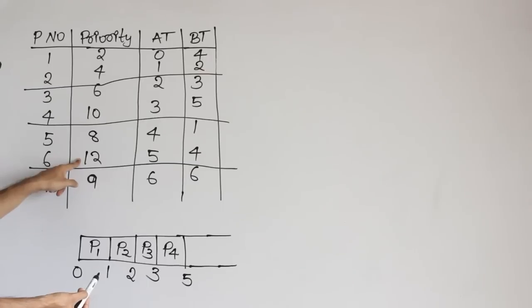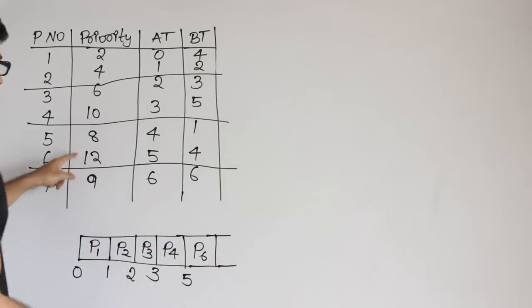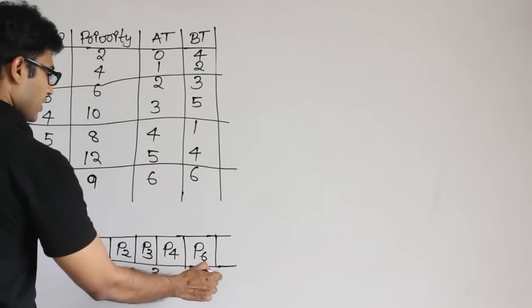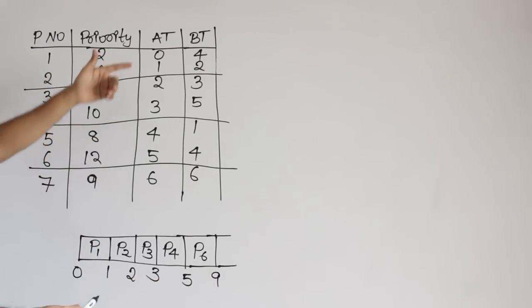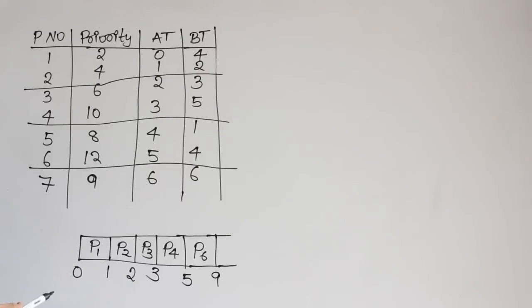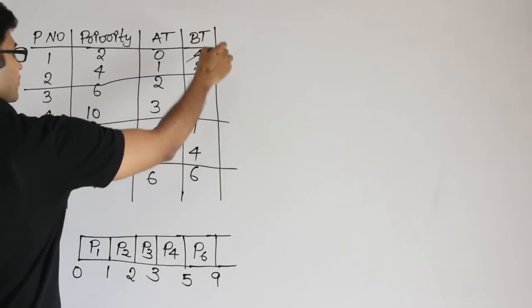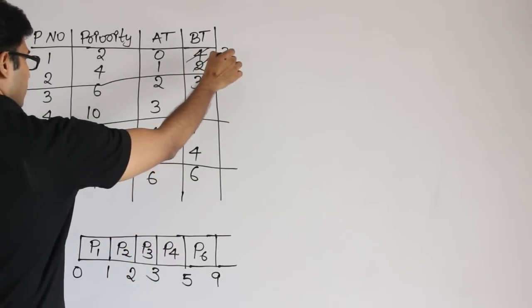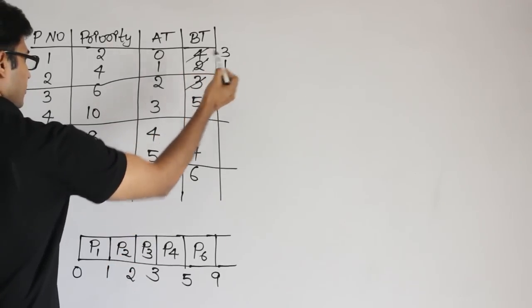At this point we are going to schedule P6, because it is having the highest priority. Since it has the highest priority, it need not be stopped at all — it can be run till completion. Its burst time is 4, so run till 9. One more thing: whenever you preempt a process, keep track of its remaining burst time. P1's initial burst time is 4, but it has run for 1 unit, so remaining burst time is 3. P2's burst time is 2 initially, it has run for 1 unit, so remaining is 1.